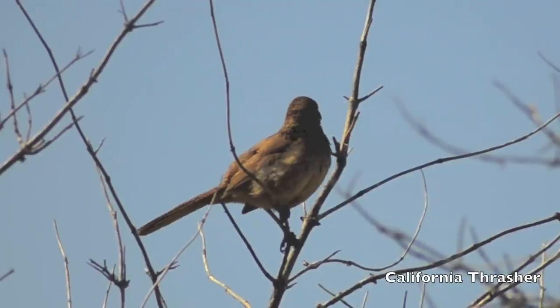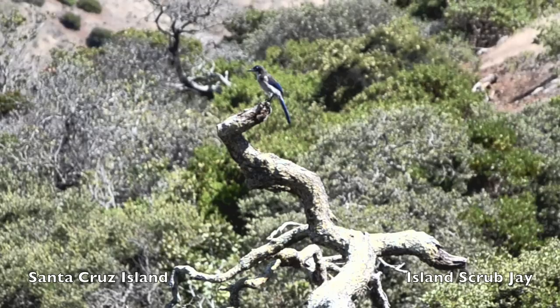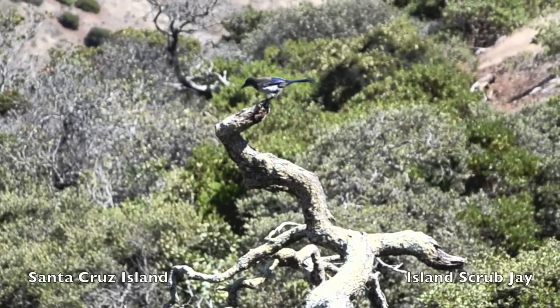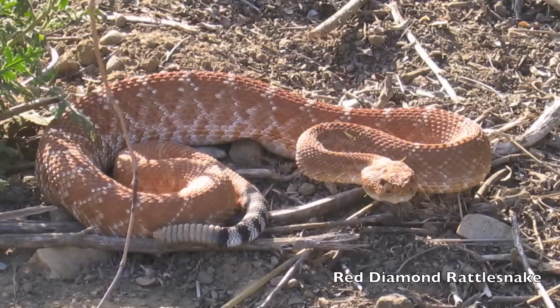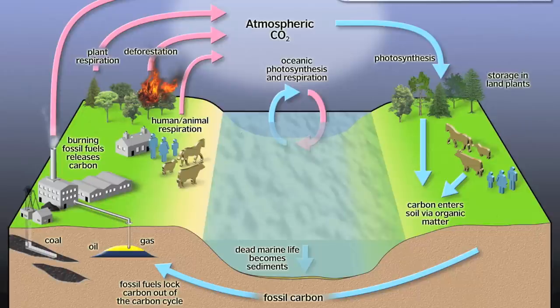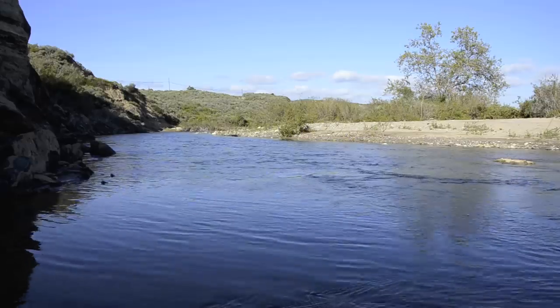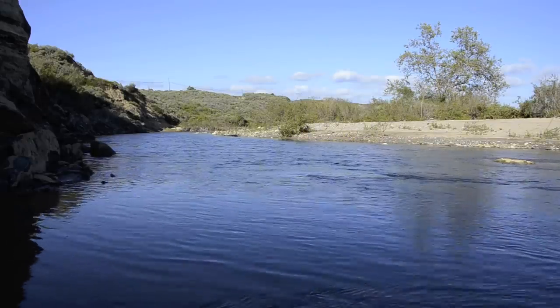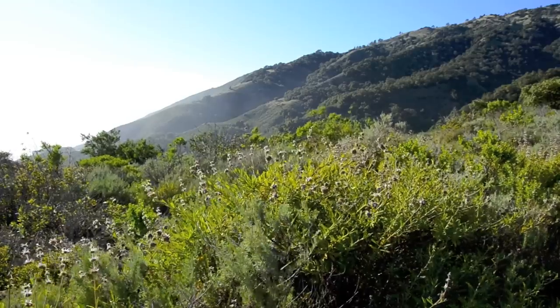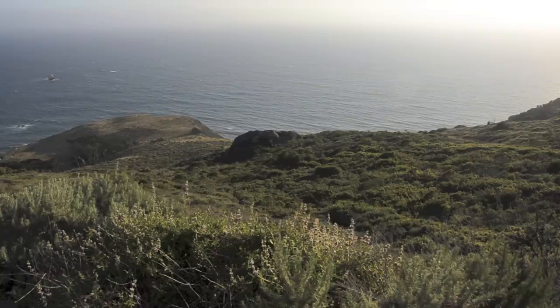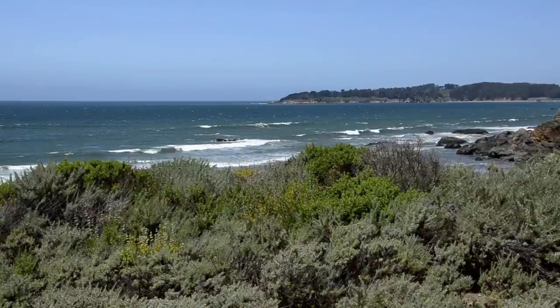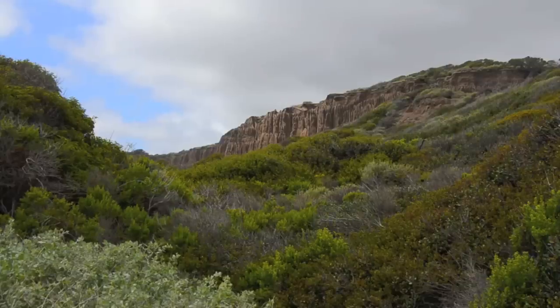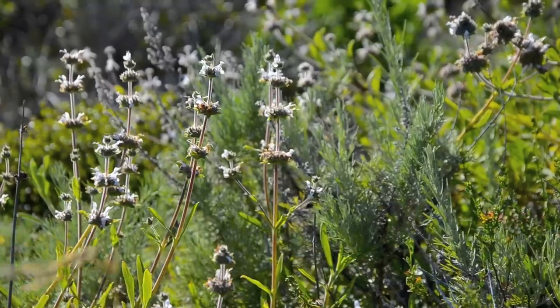Coastal sage scrub provides habitat for many important species that forage and nest and are dependent on this unique plant community. Sage scrub recycles our carbon, filters our water, replenishes our oxygen, and restores our spirit. We only have one natural environment, and once lost, it can never be fully regained.